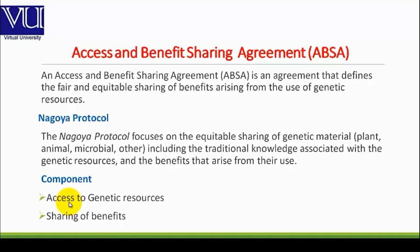There are two main things. The first thing is that the genetic resources should be transparent — if you have the genetic resources, you should be transparent. This means that you should not be able to steal. The second component is sharing of benefits — you can share the benefits.